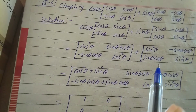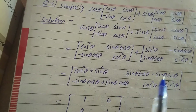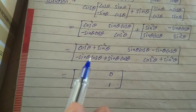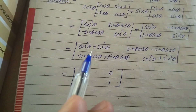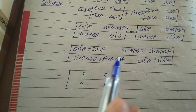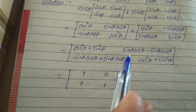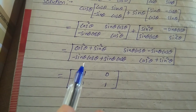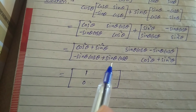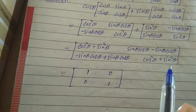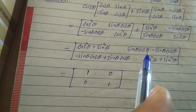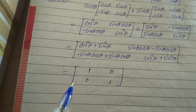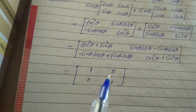Adding the two matrices: [cos²θ + sin²θ, sin θ cos θ - sin θ cos θ; -sin θ cos θ + sin θ cos θ, cos²θ + sin²θ]. This gives: cos²θ + sin²θ = 1, sin θ cos θ - sin θ cos θ = 0, and similarly the other entries give 0 and 1. So the resulting matrix is [1, 0; 0, 1].